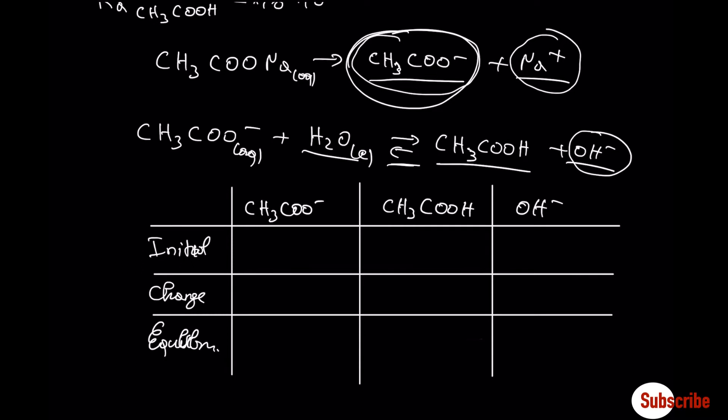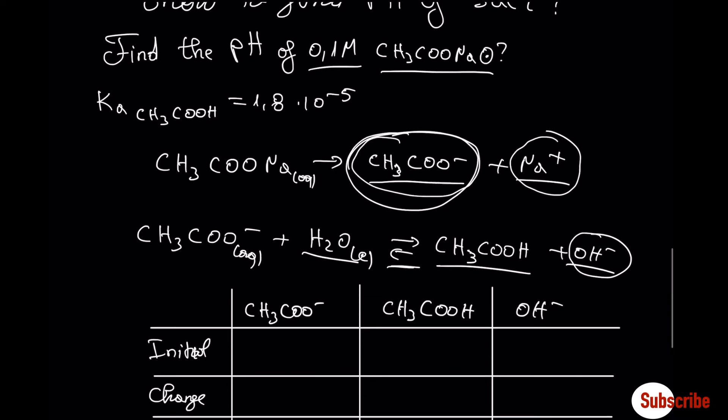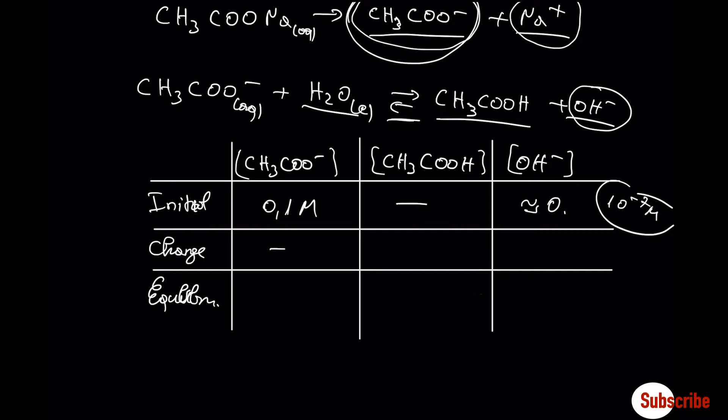So what we have at the beginning: the salt is completely soluble so we have 0.1 molar here. The concentration of acetic acid at the beginning, we do not have any acetic acid at the initial state. The concentration of OH- at the beginning is approximately 0 because some comes from the autoionization of water, 10 to minus 7 molar. It's negligible but is there because we are dealing with water solutions. So the change, equilibrium is going to shift to the right: minus X, plus X, plus X. Initial plus change step is going to give the equilibrium concentration.